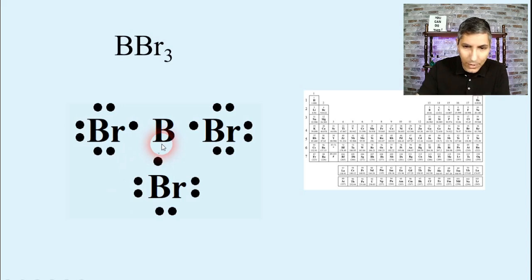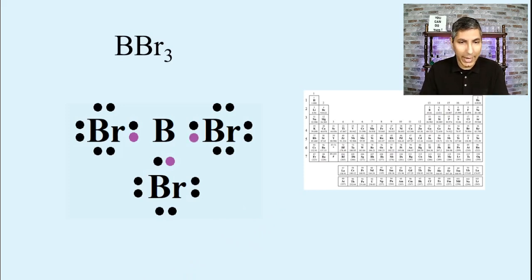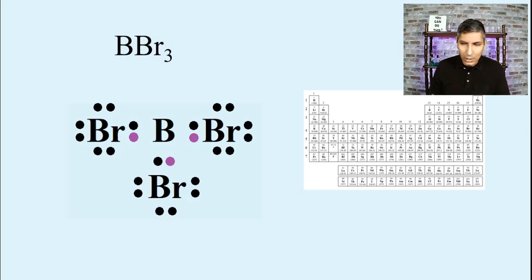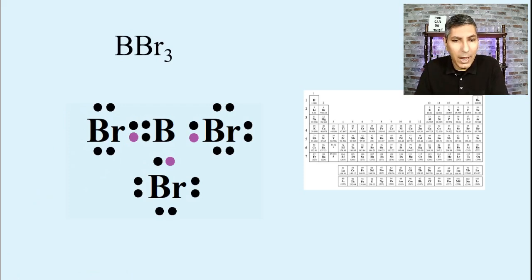Next, we have the boron atom. Looking at the periodic table, boron is in group 13, so it has three valence electrons — one, two, three dots around it. Now I ask myself: does everything have eight? The bromine atoms have eight, but boron only has six. I might want to drag a lone pair from the outside of a bromine in to give boron a double bond. That would give everything eight, and you might think that's a great Lewis electron dot diagram.